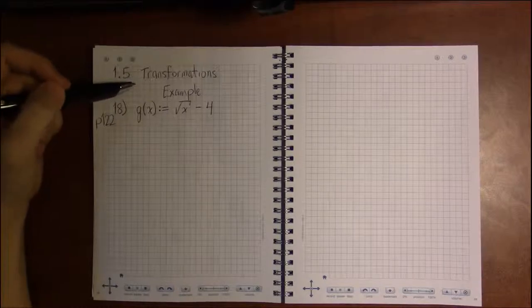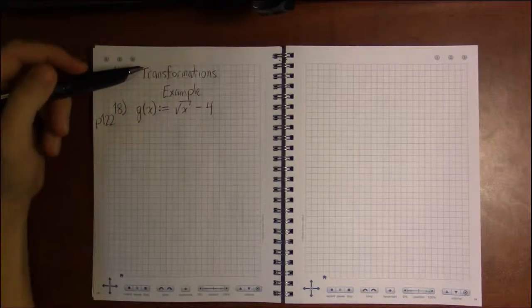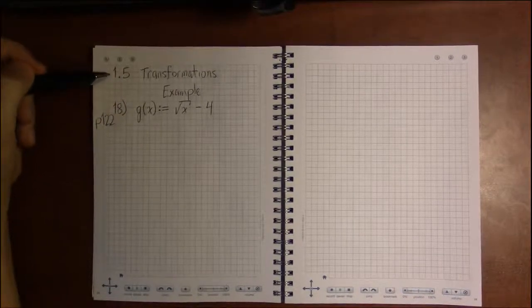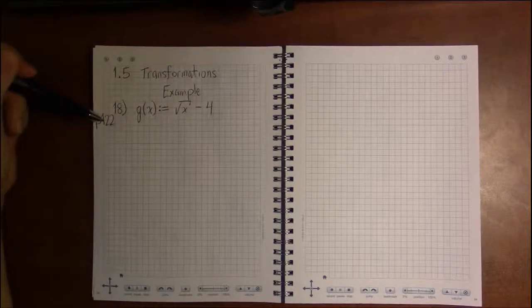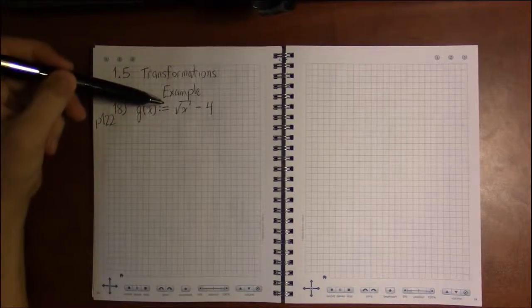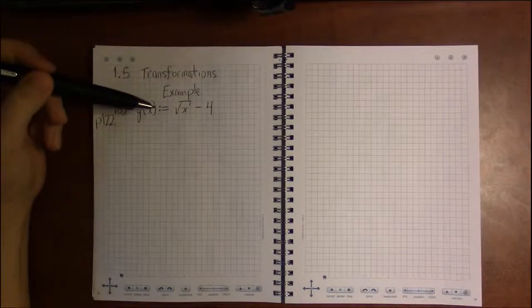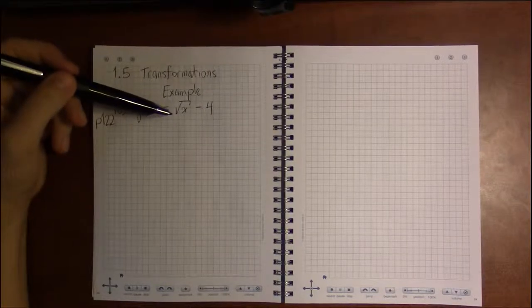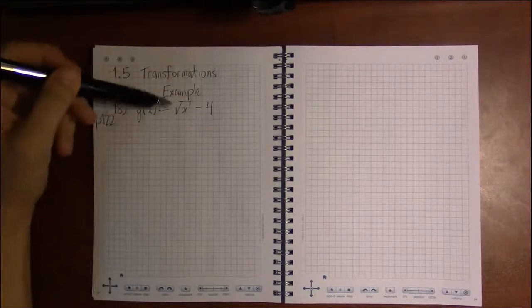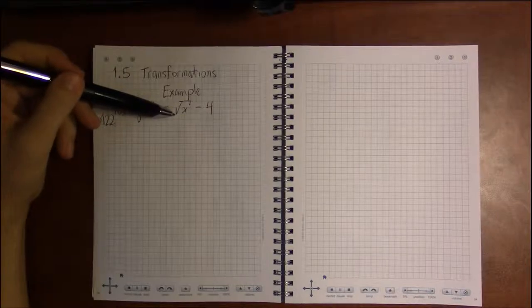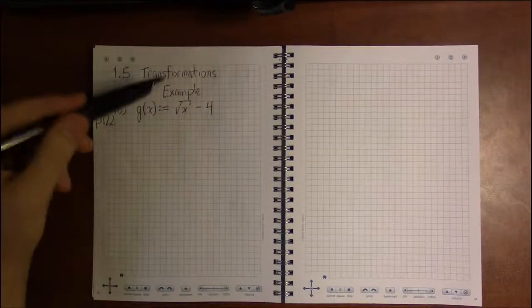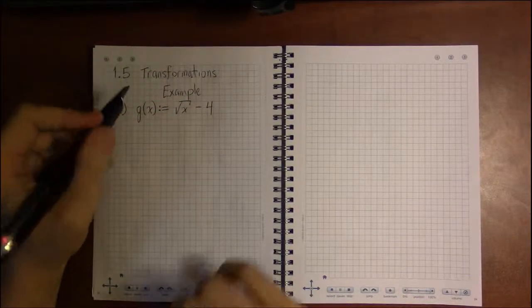Alright, it's time to take a look at a number of examples on transforming the graphs of functions. On 18 of this section, 1.5, which can be found on page 122 of the textbook, we're given the function g, and it's defined to be the square root of x minus 4.